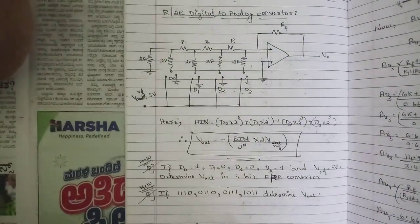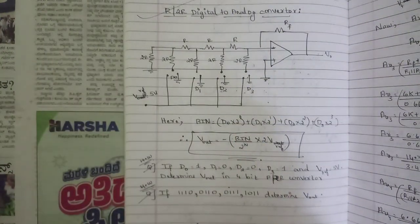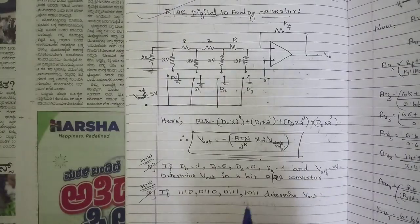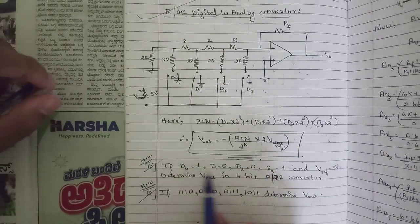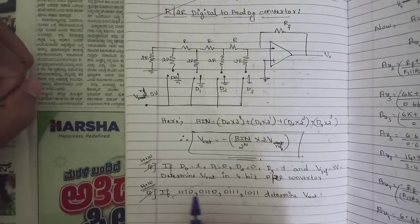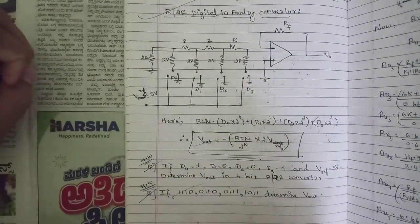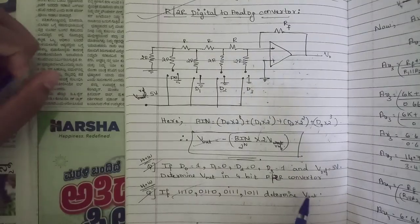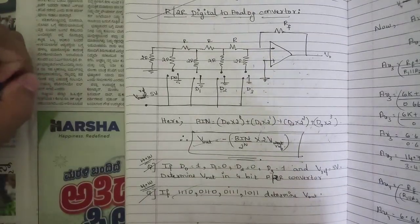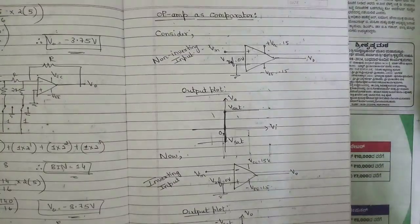One question related to the R-2R digital-to-analog converter will definitely be asked. They will give binary values for D0, D1, D2, D3 and using the formula you need to find the output voltage of the R-2R DAC. Please note this down.